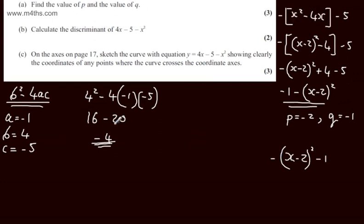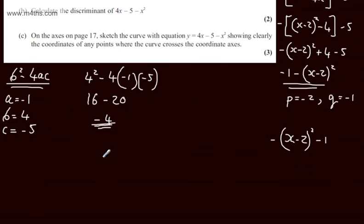In part B we took the discriminant. The discriminant was minus 4. Therefore we can say that there's going to be no real solutions for x. So all we're really interested in is where this crosses the y-axis, and that's when x is going to be equal to 0.